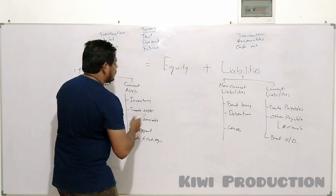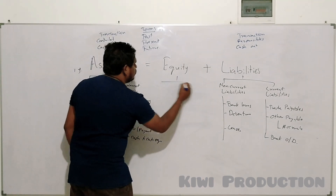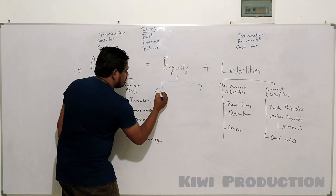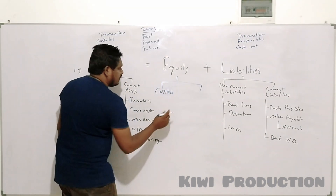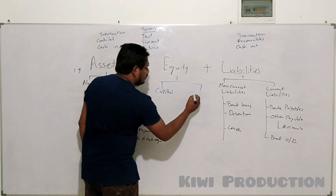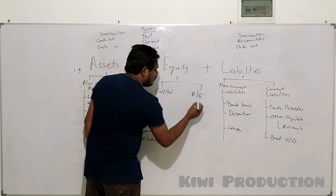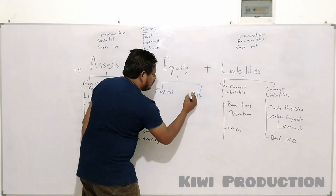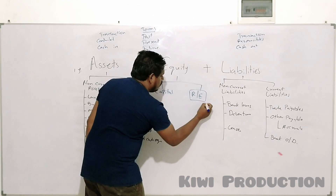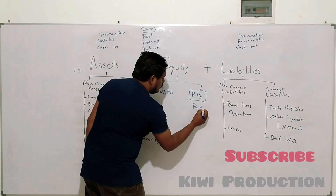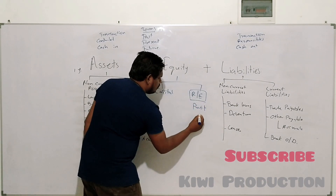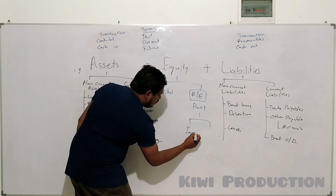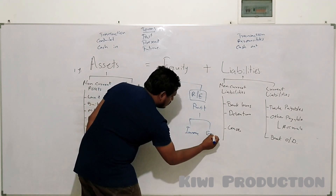Equity is divided into two parts: one part is capital, and the other part is retained earnings. Retained earnings come from profit. Profit can be divided into two components: income and expenses.